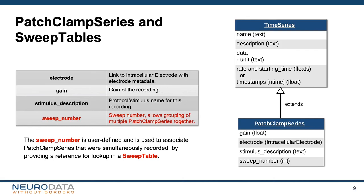The sweep number is user-defined and is used in NWB to group time series together, for example, to couple associated stimulus and response traces, or to group multiple responses for multi-patch setups. The sweep number is a reference into a sweep table that stores information about this grouping in the NWB file. Because sweep tables extend dynamic tables in NWB, we can also add user-defined columns to the table to store sweep-level metadata.